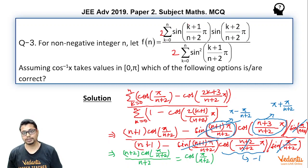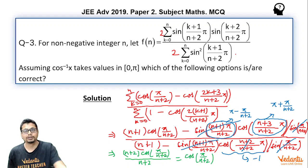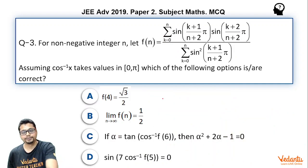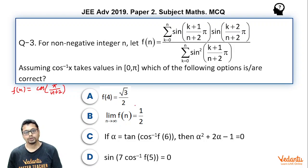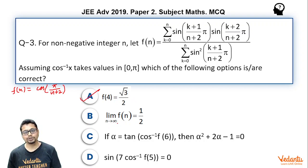Now let's explore the options. We have f(n) = cos(π/(n+2)). For f(4): cos(π/6) = √3/2, so that option is correct. As n tends to infinity, π/(n+2) tends to 0, and cos(0) = 1, but the option states 1/2, so that option is incorrect.